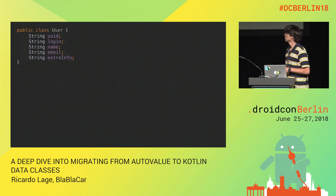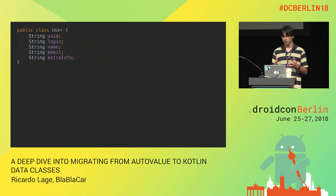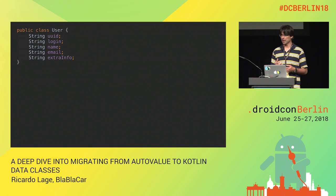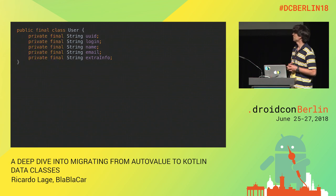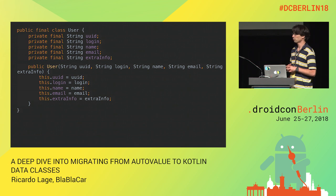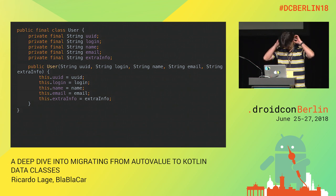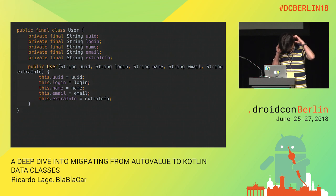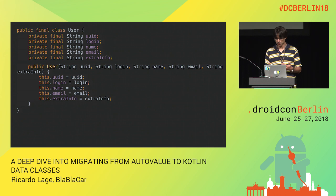Here is a simple harmless user class. We can typically call it a value or content class because we are interested in its contents. There are a number of things we can do with this class to make sure we use it properly in Java. For example, we can make sure that the class is annotated as final and its fields are final as well, so we ensure the contents are immutable. We need to have a constructor to ensure our class can be accessed properly.